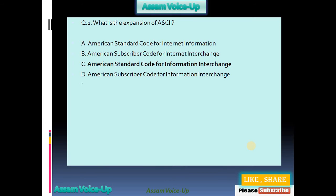Our first question: What is the expansion of ASCII? Four options are available. A: American Standard Code for Internet Information. B: American Subscriber Code for Internet Interchange. C: American Standard Code for Information Interchange. D: American Subscriber Code for Information Interchange. Our correct answer is option C — American Standard Code for Information Interchange.